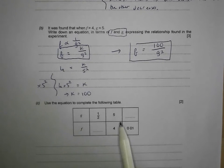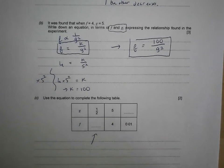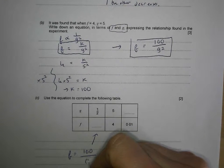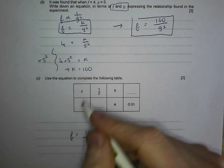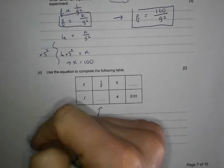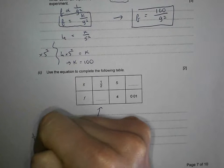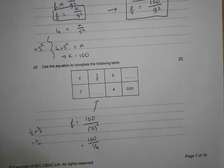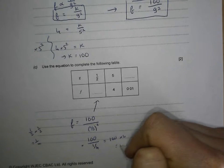Use the equation to complete the following table. When g is a half, what's f? f is going to be equal to 100 divided by g squared, so 1 half squared. Let's do this without a calculator. What's 1 half squared? That's 1 half times 1 half. Using my rules of fractions, multiply the tops, multiply the bottoms, that's a quarter. So we end up with 100 divided by a quarter. When you divide something by a quarter, that's the same as times it by 4. So that's 100 times by 4, which is going to be 400.